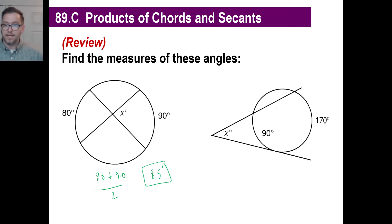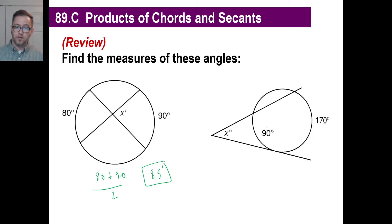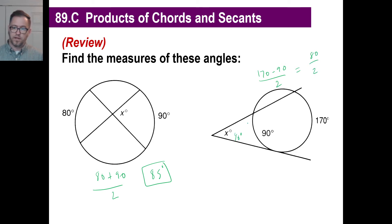If they intersect outside the circle, you don't add — you do 170 minus 90 and divide that by 2. That'll be 80 divided by 2, which means x is going to be 40 degrees. Just a reminder on those.